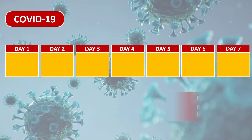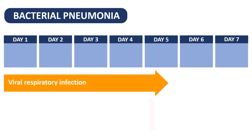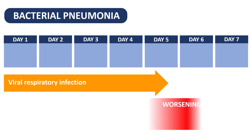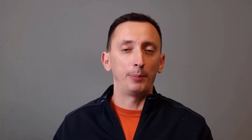And again, notice this course of illness — seemingly unimpressive symptoms in the beginning, and then deterioration later on. Both COVID and bacterial pneumonia can do this. So how can you tell the difference? Chest x-ray can help us a lot, but there are cases when even x-ray will be inconclusive, so we need additional help from lab tests.